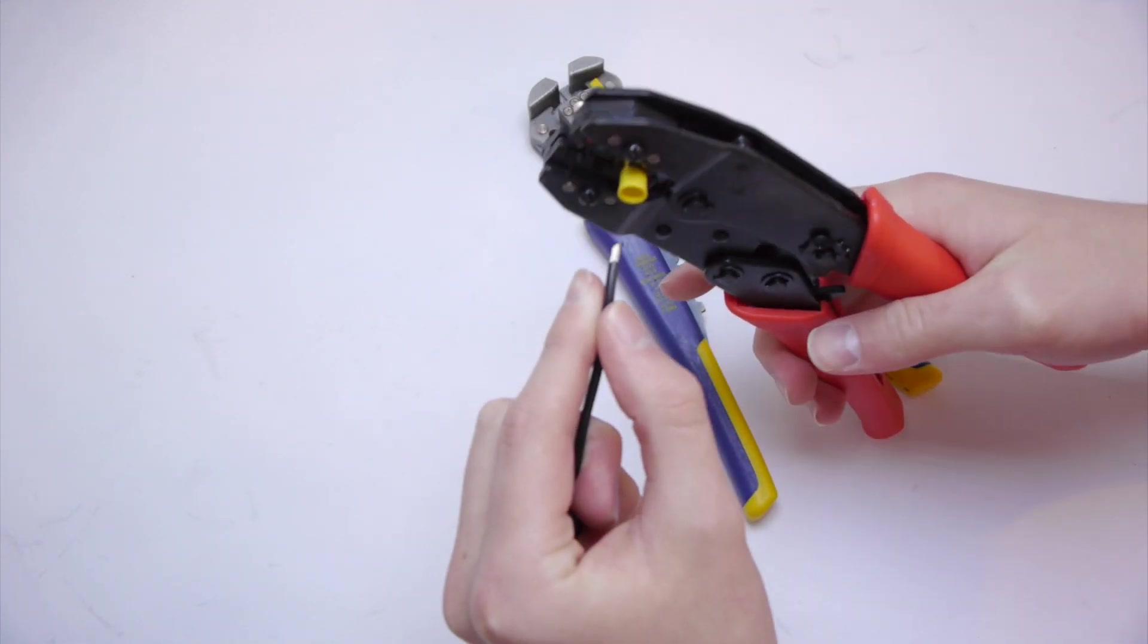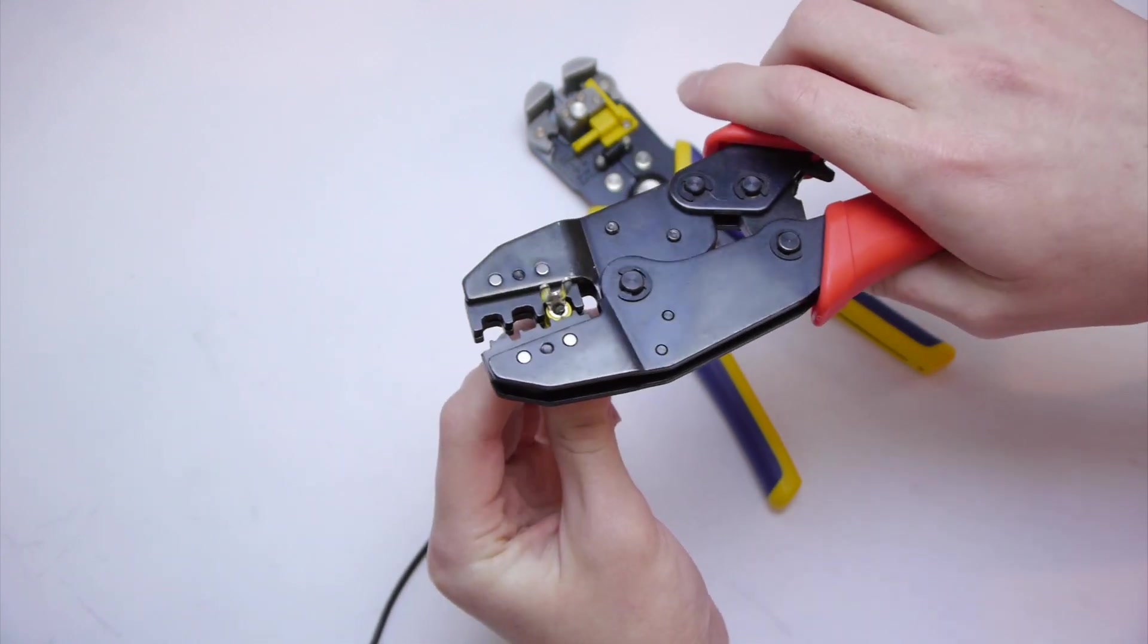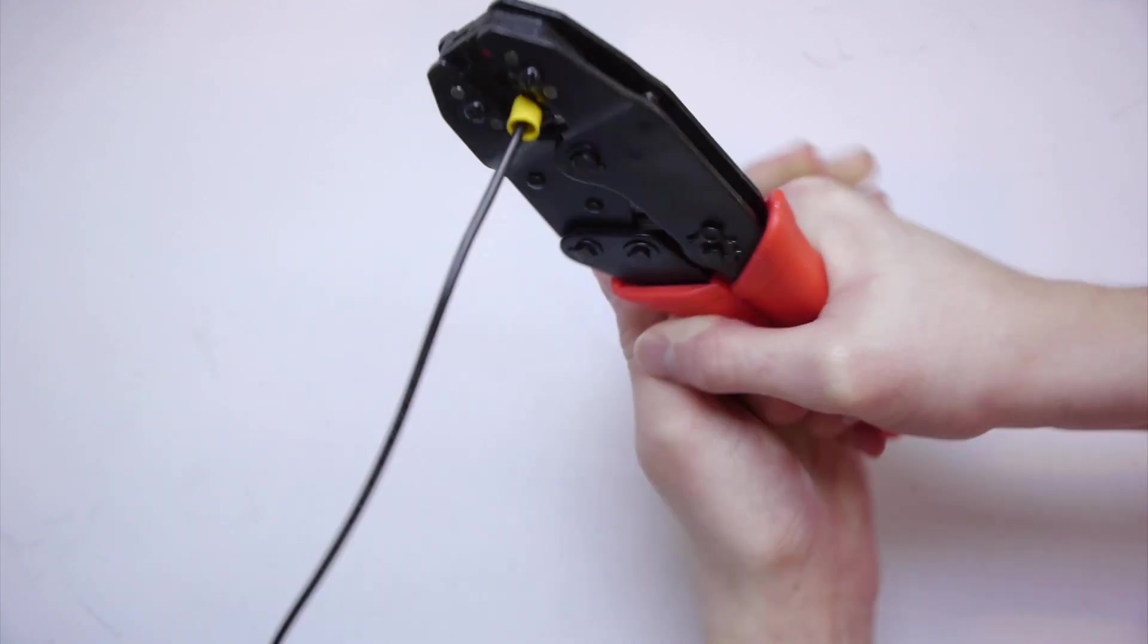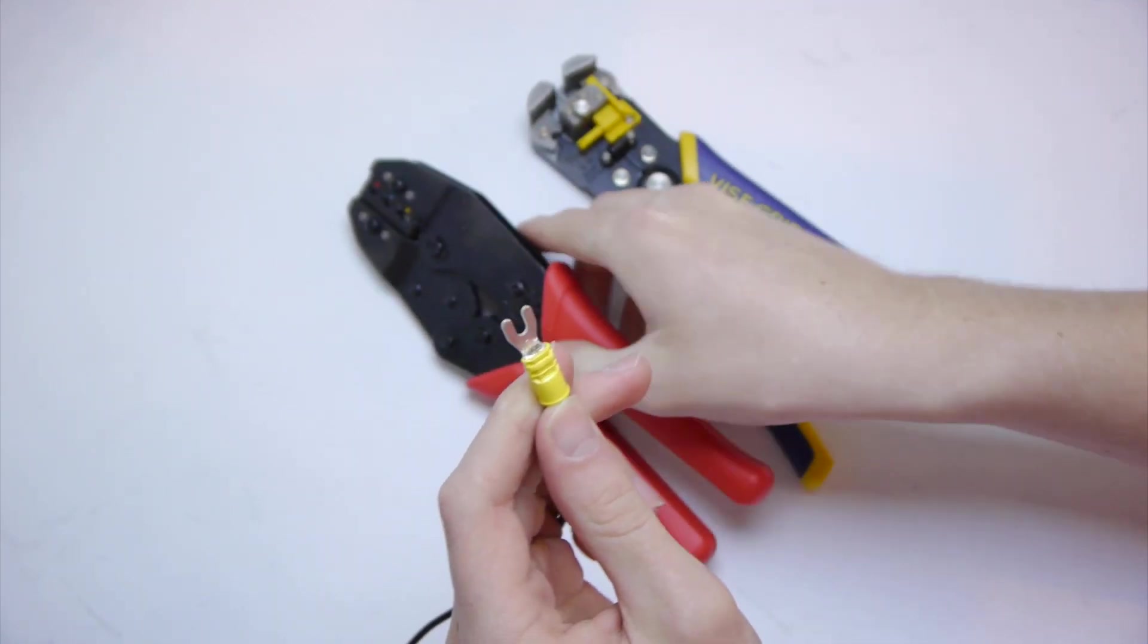Take the wire, and push it in just far enough so that it's flush with the other side. Then you just pull, sometimes it can take quite a bit of muscle, and you're all finished.